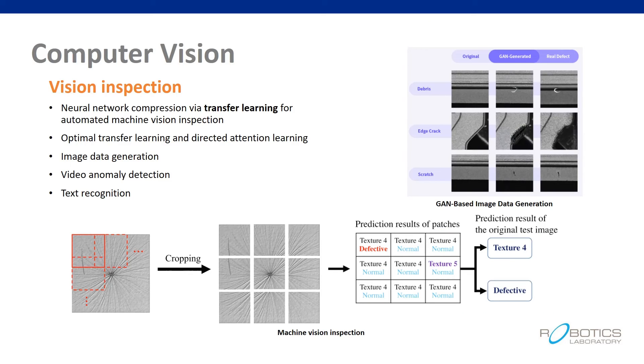In vision inspection, we propose transfer learning-based neural network compression for automated machine vision inspection. We also study image data generation from insufficient datasets. Anomaly detection by unsupervised learning from video datasets is also being studied.